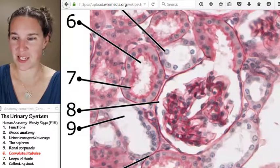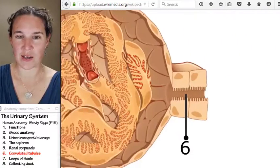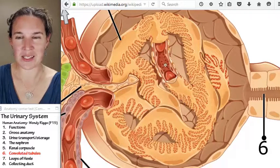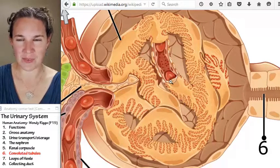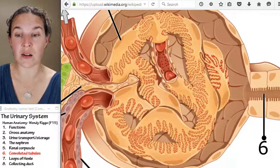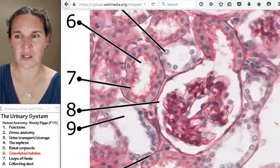In fact, the last picture that I just showed you is right here. Can you see what is capillary and what is podocyte or visceral layer of Bowman's capsule? Yeah, no.